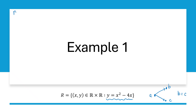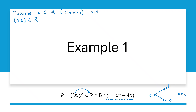For our proof, we are going to start by picking any element from the domain. So we are going to assume A is some element from R — this is our first coordinate, some element of R, and R is our domain. We are going to assume that A is related to some B, so the ordered pair AB is in R. And we are going to assume the same A is related to C, so the ordered pair AC is in R as well. This is our assumption.